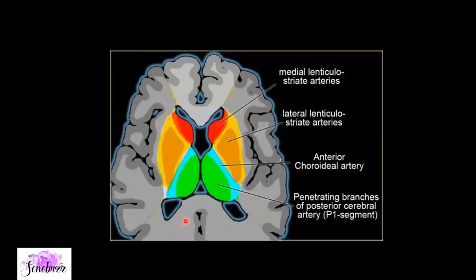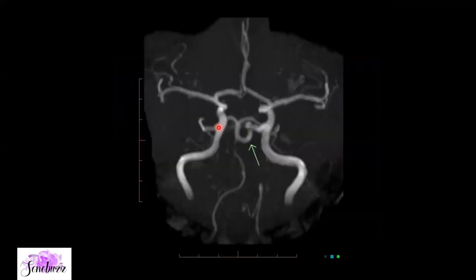A small revision of basal ganglia arterial supply: the anterior choroidal artery supplies the posterior limb of the internal capsule; penetrating branches of the PCAs supply the thalamus; lateral lenticulostriate arteries from the MCA are shown in yellow; and medial lenticulostriate arteries arise from the ACA.